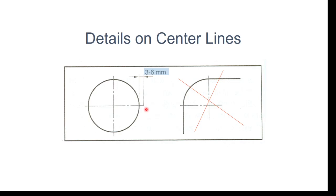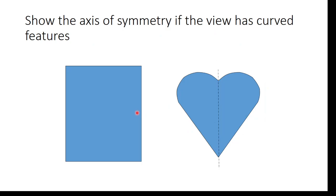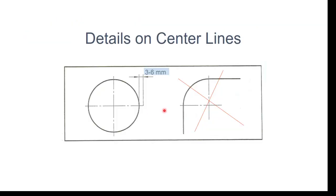First, let us talk about precedence of lines — priority of lines, drawing priority of lines — and then, giving an example, explain the logic of making such further extensions. If over a projection there is a circle, semicircle, ellipse, or semi-ellipse, we show horizontal and vertical symmetry axes using this line type: a thin line that uses long and short dashes with spaces along the line of action.